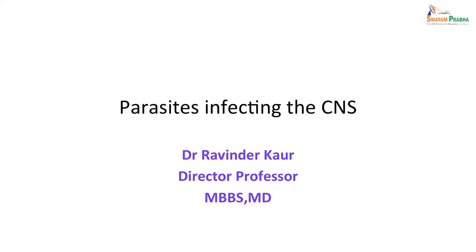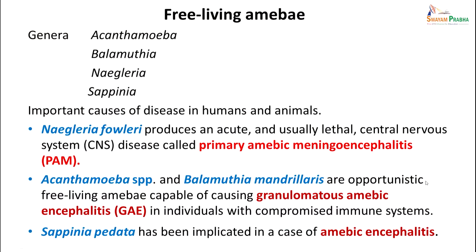We will be talking about parasites infecting the CNS today. There are a few parasites which are mainly free-living amoebae of the genera Acanthamoeba, Balamuthia, Naegleria, and Sappinia, which have been discovered to cause serious infections like granulomatous amoebic meningoencephalitis, which is a serious and fatal disease. Naegleria fowleri produces an acute and usually lethal CNS disease called primary amoebic meningoencephalitis. Acanthamoeba species and Balamuthia species are opportunistic free-living amoebae capable of causing granulomatous amoebic encephalitis in immunocompromised individuals, while Sappinia has recently been implicated in a case of amoebic encephalitis.